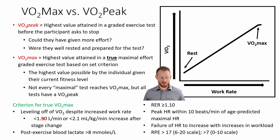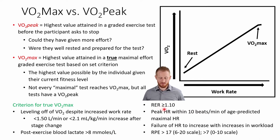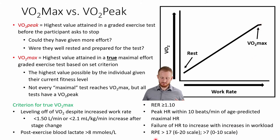Common criteria for confirming a true VO2 max include: a leveling off of VO2 despite increasing work rate (an increase of less than 1.5 L/min or less than 2.1 mL/kg/min despite increased intensity); a blood lactate level greater than 8 mmol/L of blood; a respiratory exchange ratio (RER) equal to or greater than 1.1; a peak heart rate within 10 beats of the age-predicted maximum; and a failure of heart rate to increase with further increases in workload.